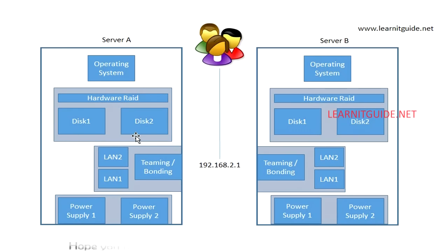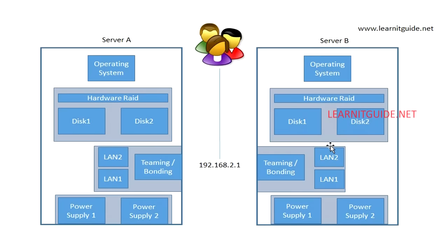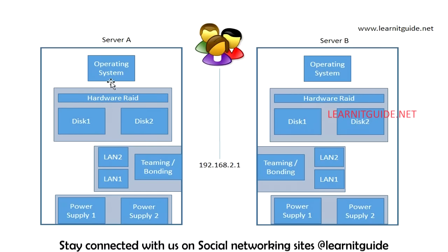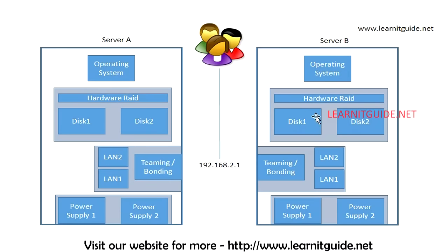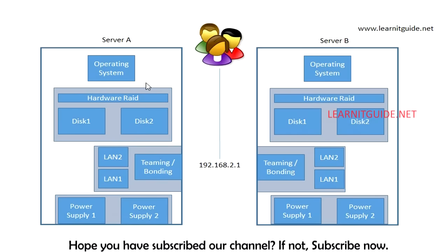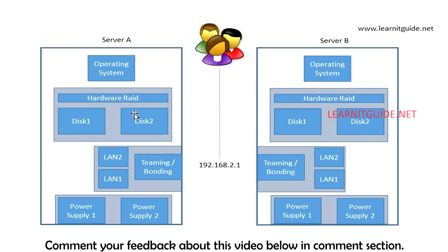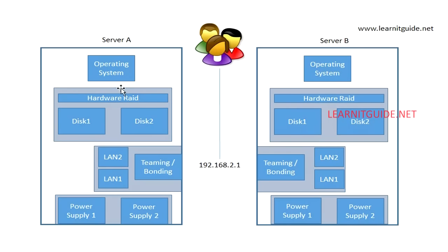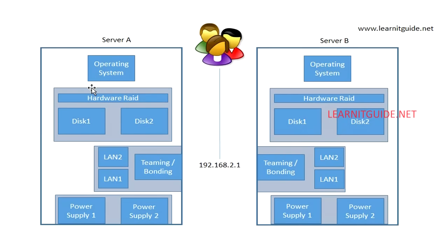Both servers are up and running, but the IP 2.1 is configured only on the active node — Server A. Server B is passive, meaning it is idle. When there is an issue with Server A, the configured IP switches over to Server B, which then becomes the active node.